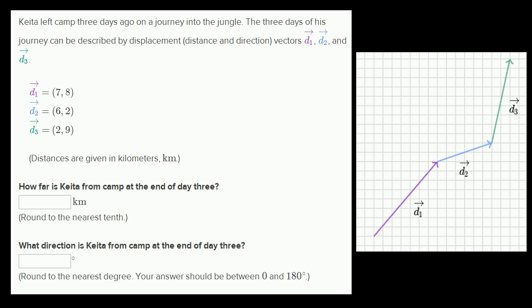Let's think about what's happening. On day one, let's say this is his starting point and he goes from here to there. Let me draw a little compass here: this is north, this is east, this is west, and this is south. We can break down his displacement by how much he went in the east direction and how much he went in the north direction.